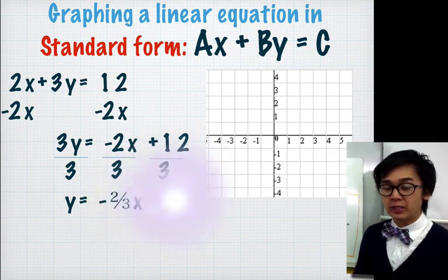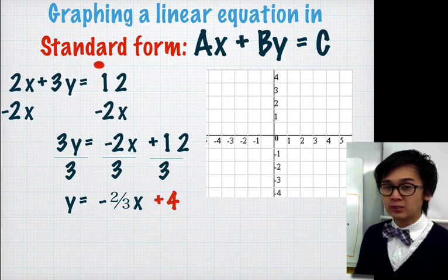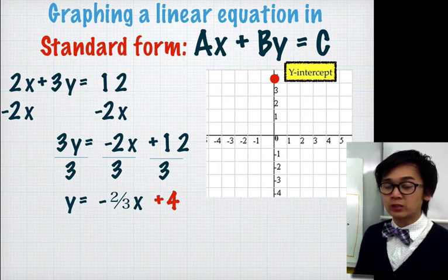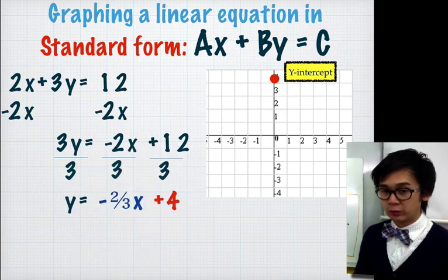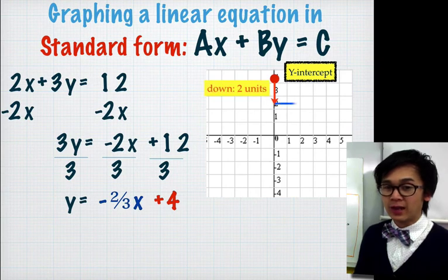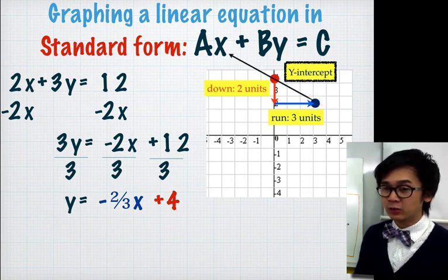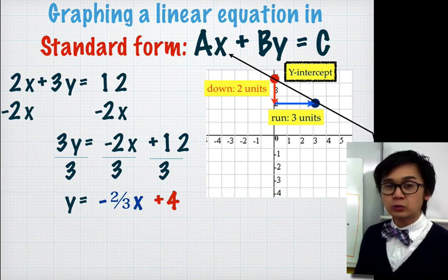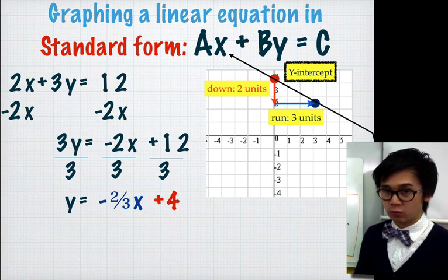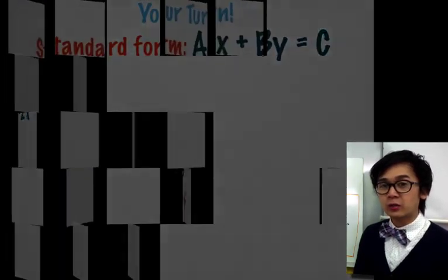Using the y-intercept of 4, we plot our first point at positive 4 on the y-axis. Since the slope is negative, we move 2 units down and then 3 units to the right to find our second point. Connecting the two points gives us the graph of 2x + 3y = 12, converted into slope-intercept form. That is how we graph linear equations using this technique.